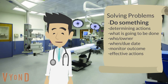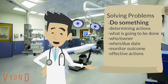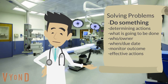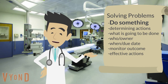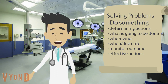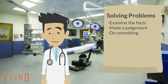Doing something simply means determining the action, working out what's going to be done, who's going to do it — the owner of the action — when it's going to be done — the due date — and monitoring the outcome as we go, or in other words, making sure our actions are effectively solving the problem.